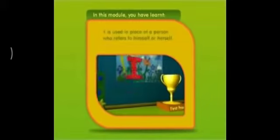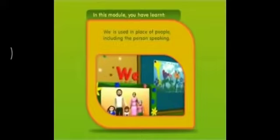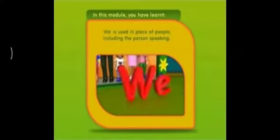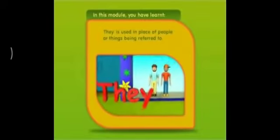In this module, you have learned that a pronoun is a word used in place of a noun. It is used in place of a thing. I is used in place of a person who refers to himself or herself. We is used in place of people, including the person speaking. He is used in place of the name of a boy or man. She is used in place of the name of a girl or woman. They is used in place of people or things being referred to.